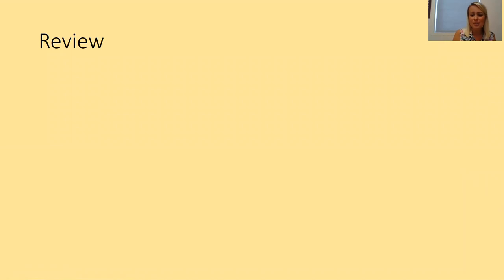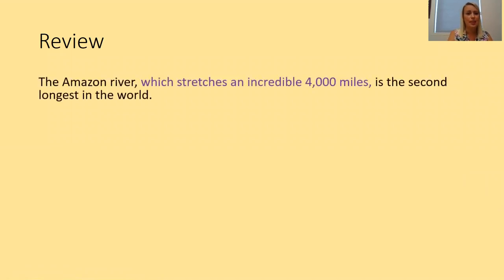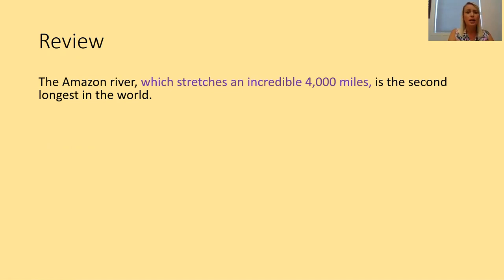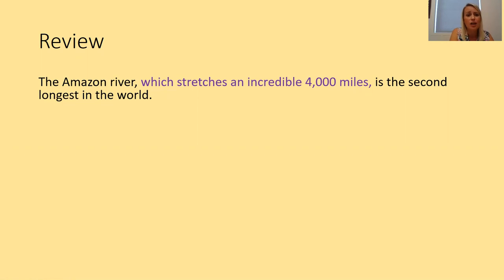Let's review some of your possible answers. We started with the main clause: 'The Amazon River is the second longest river in the world.' The noun I modified is 'the Amazon River.' Because it's talking about the length of the river, I've added extra detail about how long it actually is as an embedded relative clause: 'The Amazon River, which stretches an incredible 4,000 miles, is the second longest in the world.'